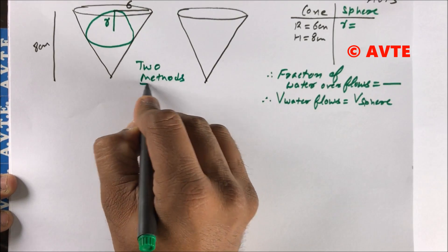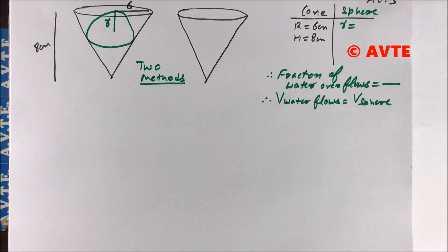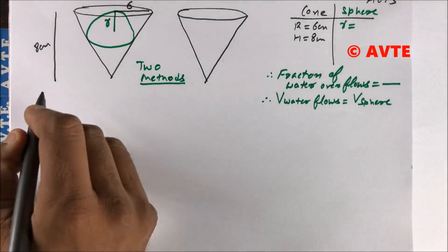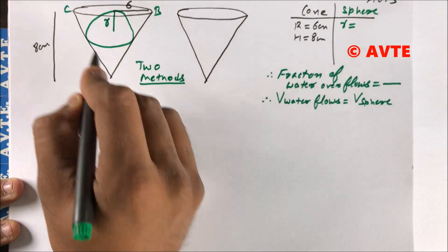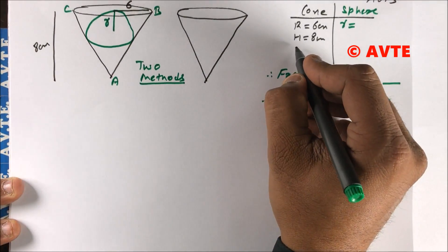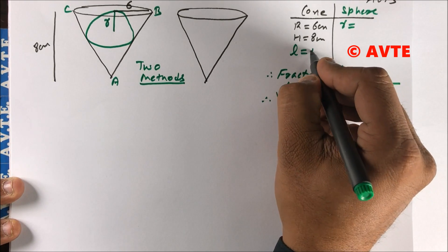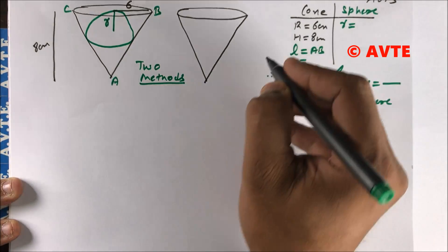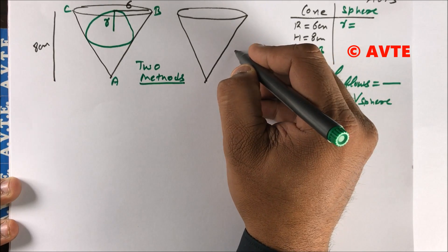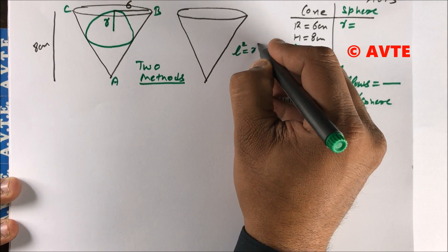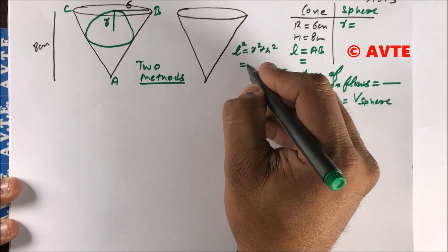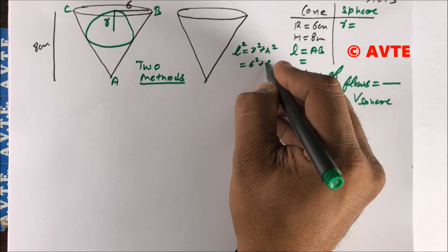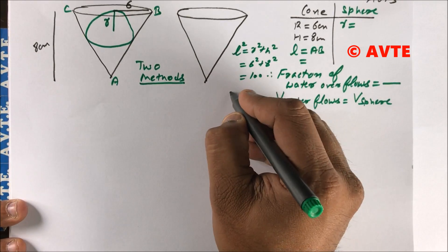First, we have to find the slant height of the cone. The slant height of the cone is L, that is AB or AC. So L is equal to √(R² + H²), that is √(6² + 8²).